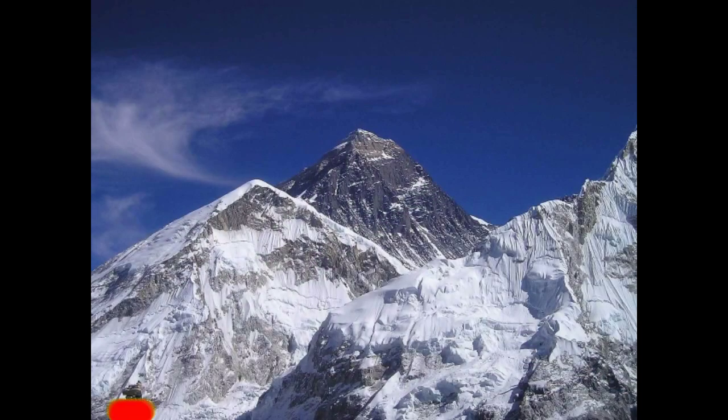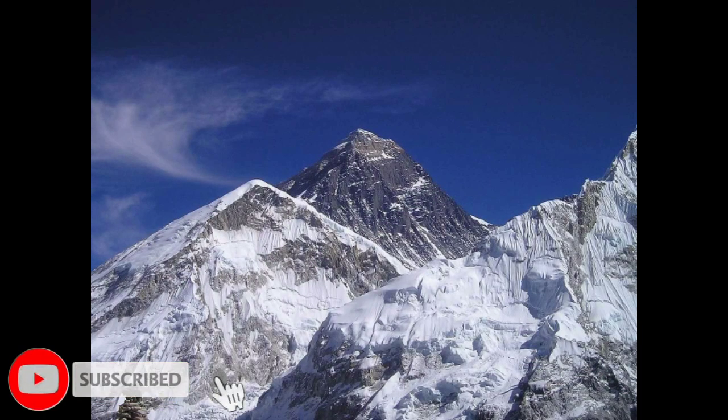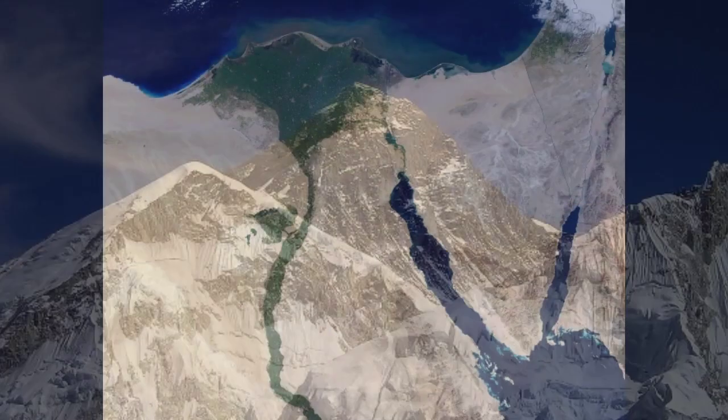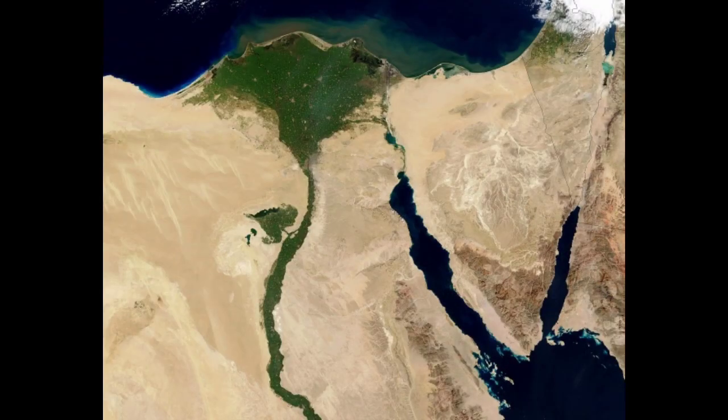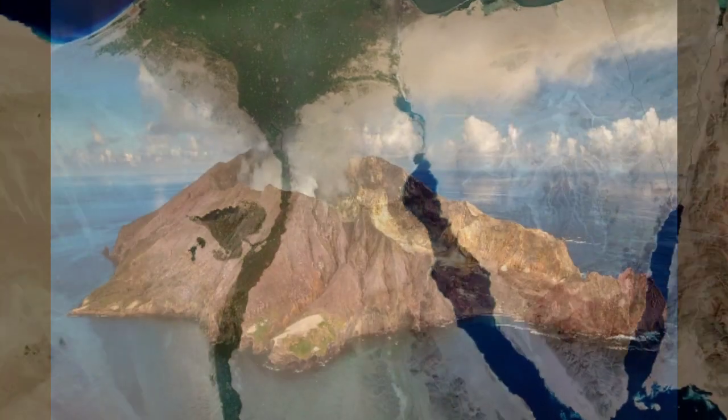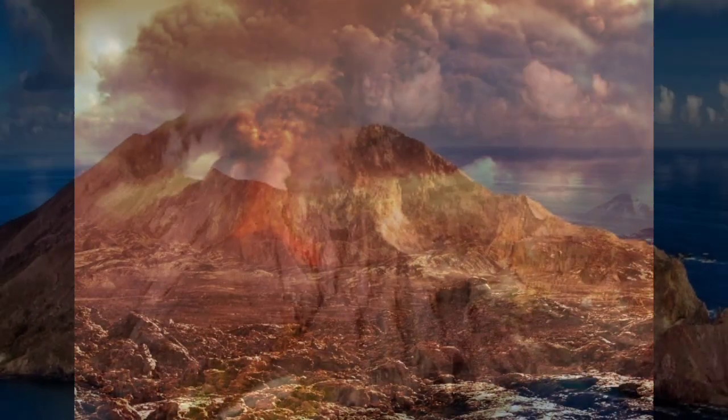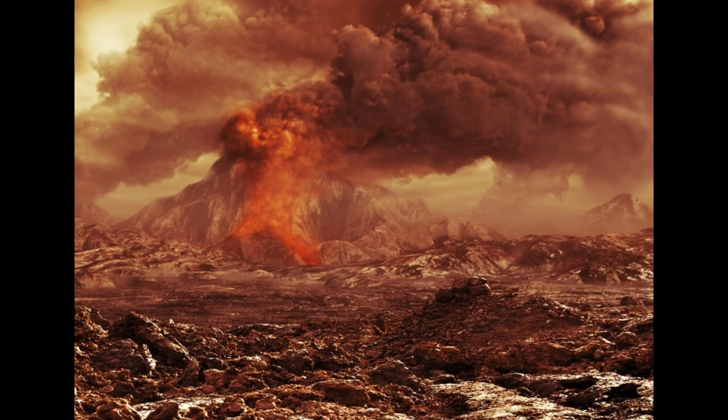Mount Everest is the highest mountain on Earth. The peak of Mount Everest is 8,850 meters above sea level. The Nile River is credited as the longest river in the world. On Earth there are about 1,500 potentially active volcanoes worldwide. Out of them, 500 volcanoes have erupted in historical time.